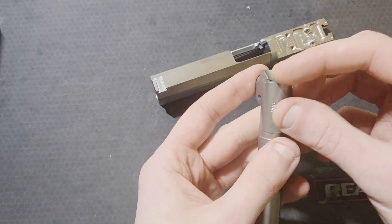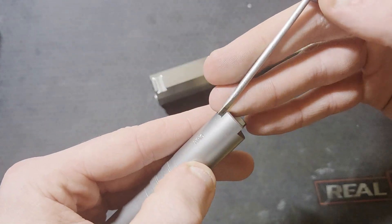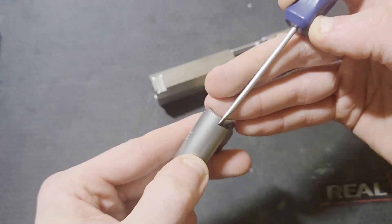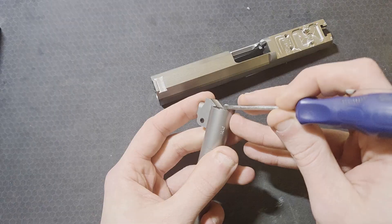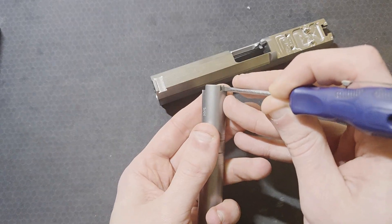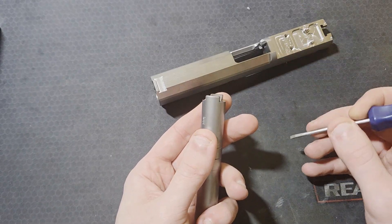I'll be machining the majority of the hood material off leaving myself about one thou on either side to take off by hand. This means I will machine 16 thou off the right side not 17 and six thou off the left side not seven.